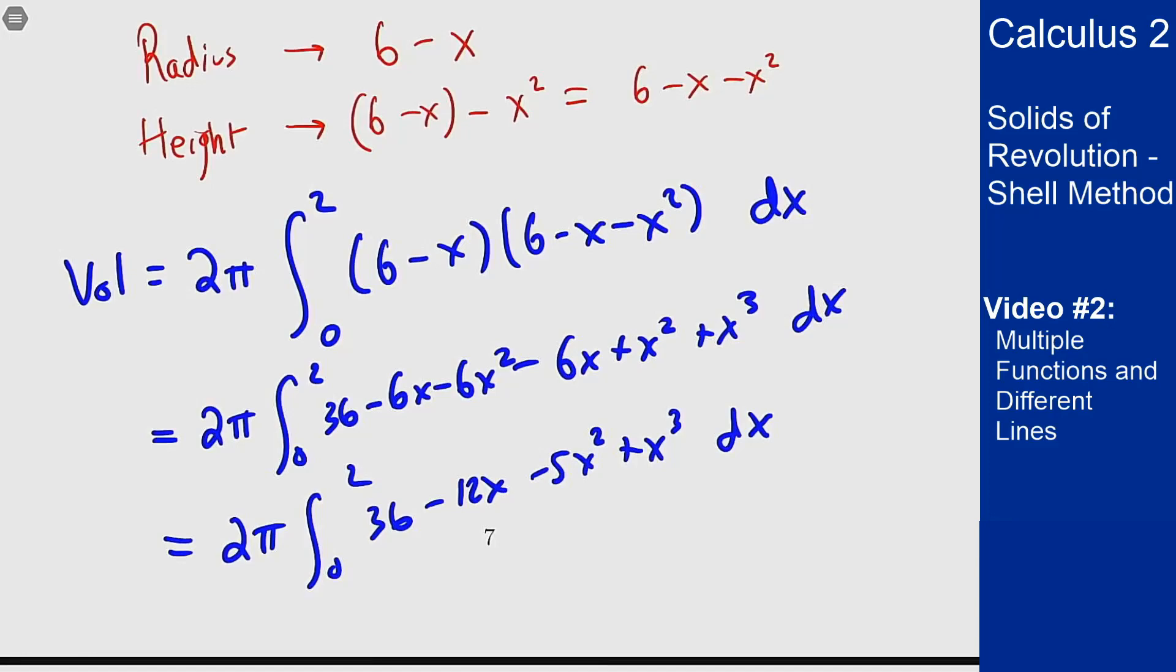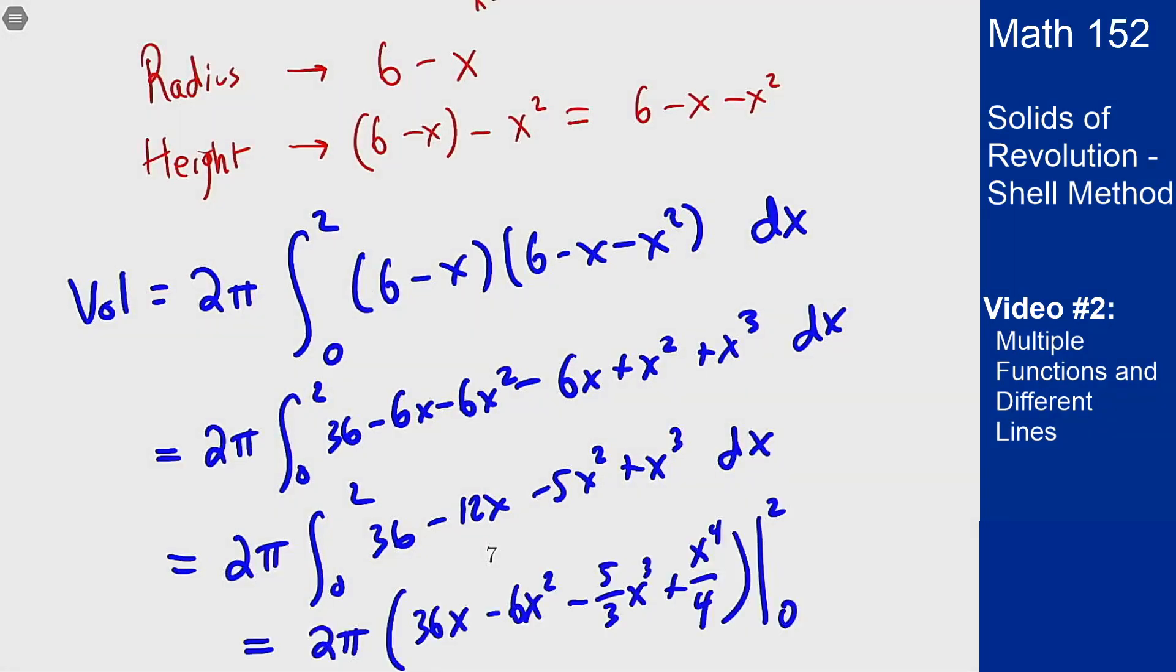And that's what you get for simplifying. We then find the antiderivative which gives us this, and then we can just plug in our endpoints. We'll plug in 0, everything goes away because that's all 0. If I plug in 2, this gives me my entire integral and the volume here as 232π over 3.